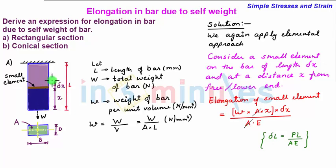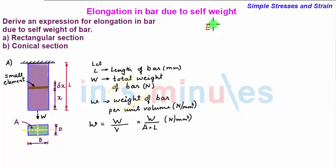So now the elongation of this total bar due to the total weight w will be given by the integral of this term. So elongation of whole bar that is delta L is given as integral from 0 to L W into x upon E into dx.